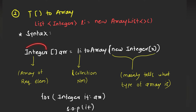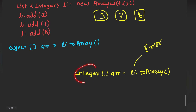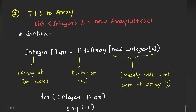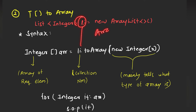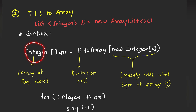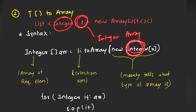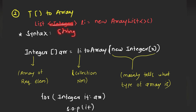The T in T[] toArray simply says we can convert the object array to any array we want. Earlier we only required an object array, and when we tried to convert it into an integer array it gave an error. With this second method, we declare the array type as Integer[], use the list name li, call toArray(), and pass new Integer[0] to tell the compiler what type of array we want. Suppose this was String, then it would be String[] here. This method helps us convert the object array to any array type.